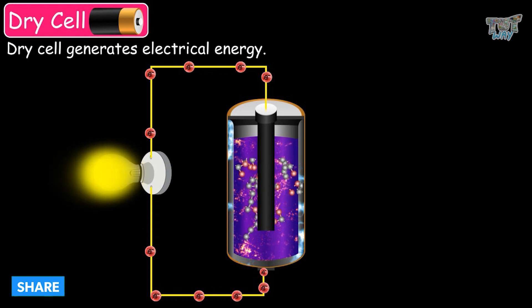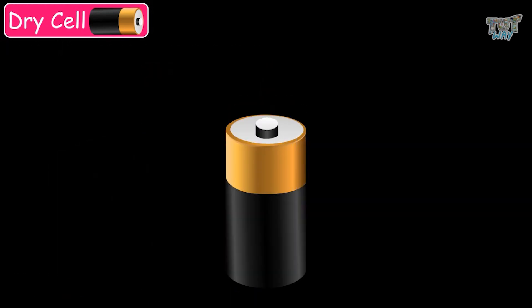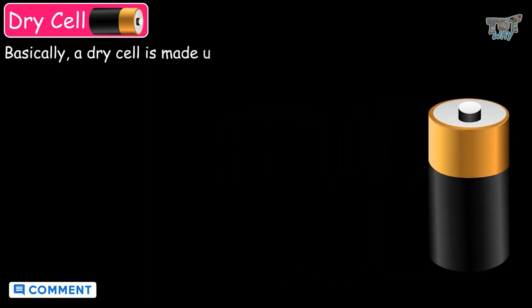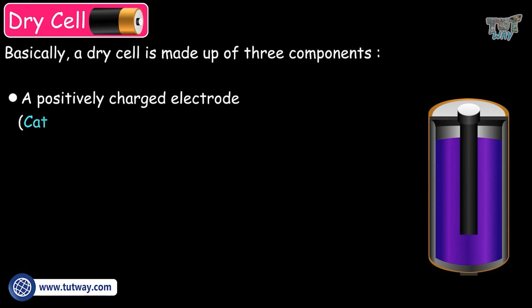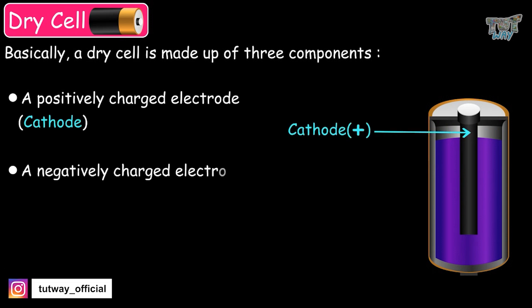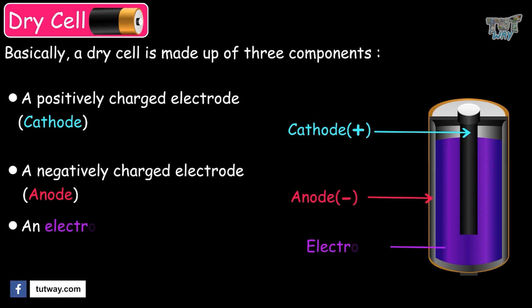Now, we will learn in detail about the dry cell, which is the type of battery that is used today. Basically, a dry cell is made up of three components: a positively charged electrode, which is called the cathode; a negatively charged electrode, which is called the anode; and an electrolyte present between both electrodes.